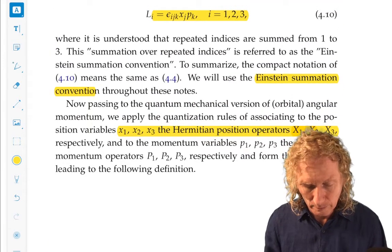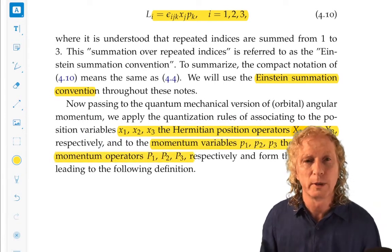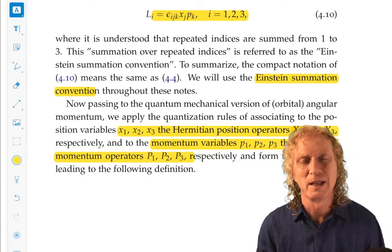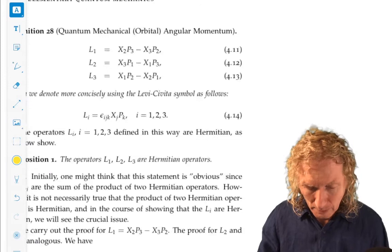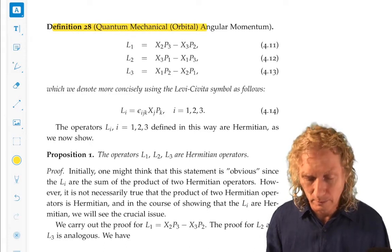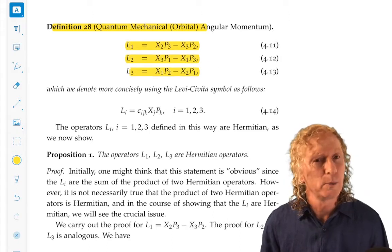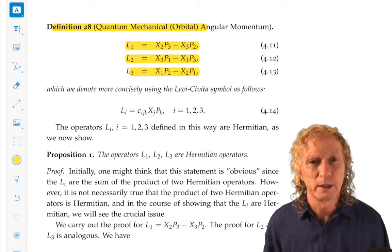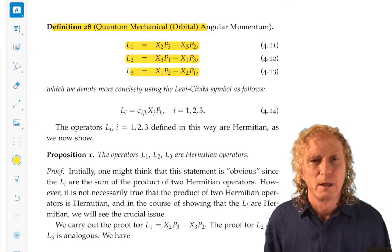And for the momentum variables, we're going to replace them by the corresponding quantum mechanical operators, uppercase for quantum mechanical operators and lowercase for coordinates. Okay. And that leads us to our definition for quantum mechanical orbital angular momentum. The same three components, but the x's and p's are now what? They're now the corresponding quantum mechanical operators.